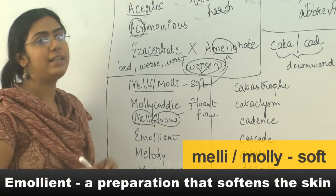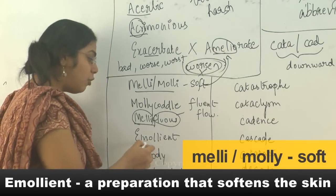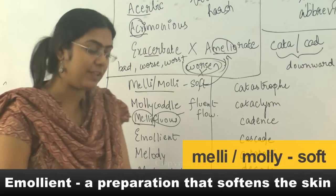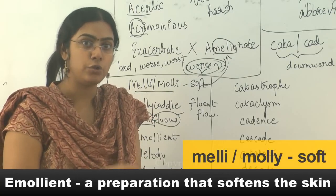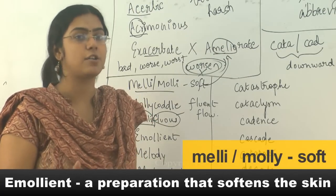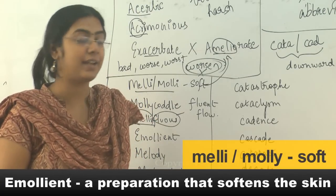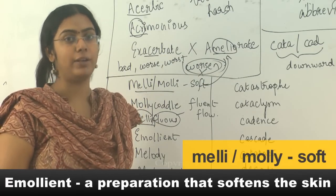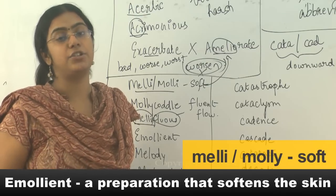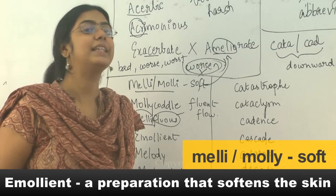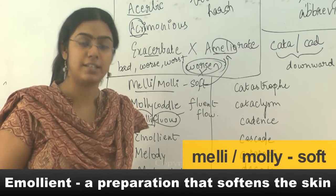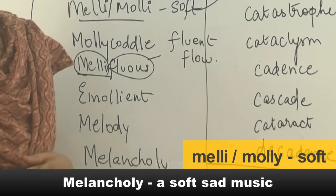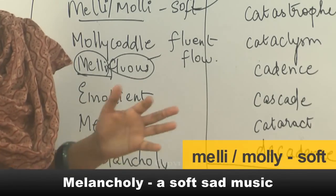Emollient is a softening agent. For example, if you have very dry skin, you apply Vaseline or some softening agent — that is an emollient. In a general context it can mean anything that softens a given situation. Melancholy means very soft, slightly sad music.